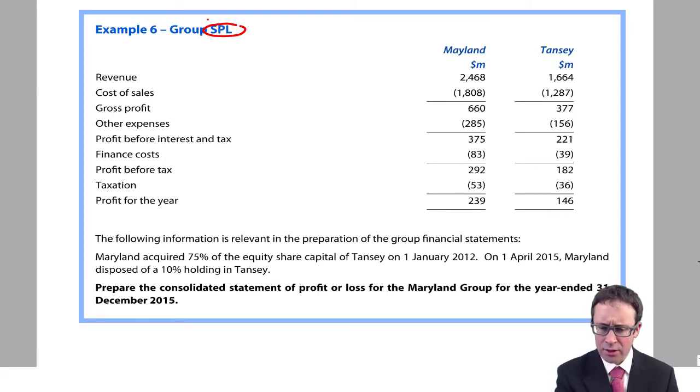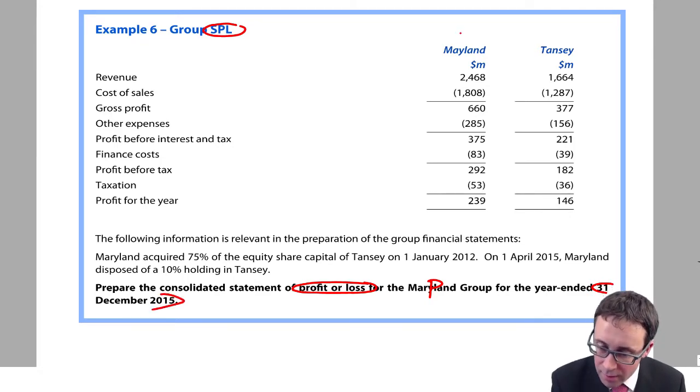It says, prepare the consolidated statement of profit or loss. So it doesn't want other comprehensive income or anything like that, just profit or loss. For the Maryland group, so Maryland must be the parent. For the year ended 31st of December 2015. So I know that Maryland is the parent. I presume that Tansy will be the subsidiary.